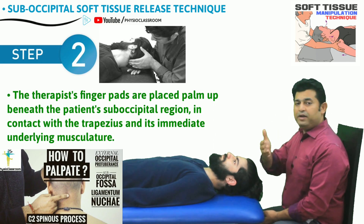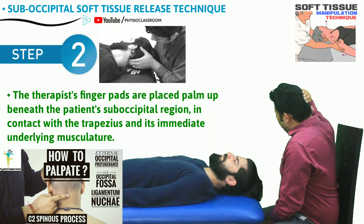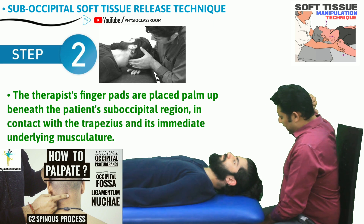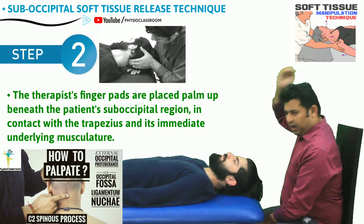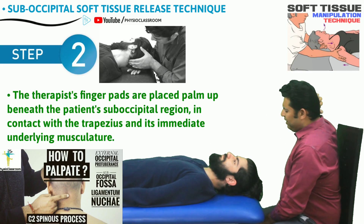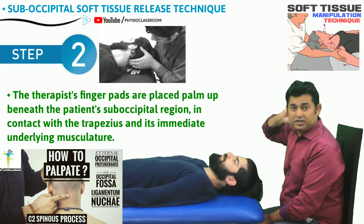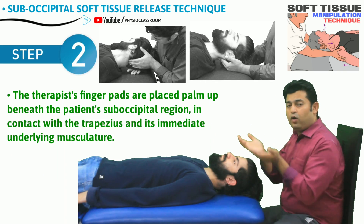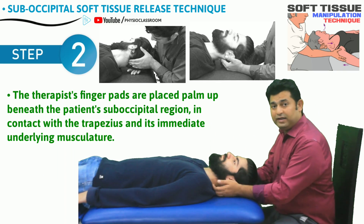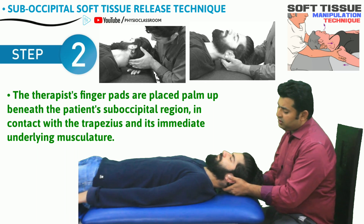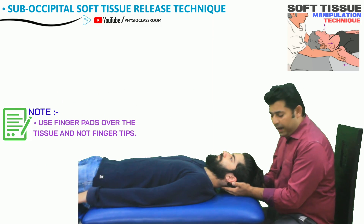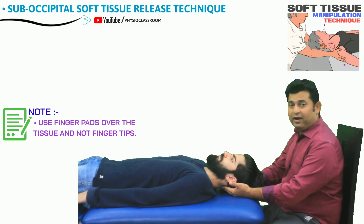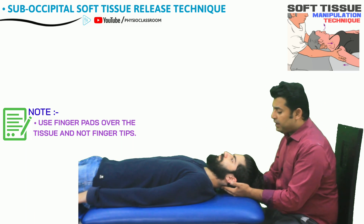In the palpatory video for the suboccipital region, I mentioned how we can start from the occipital bone and keep coming down — the place where the palpation becomes springy rather than bony is the suboccipital fossa. I have to be right in and around the suboccipital fossa for this technique. After the finger pads are placed, I draw my palms out so the head can rest on the table.